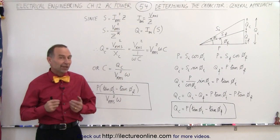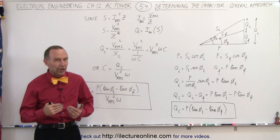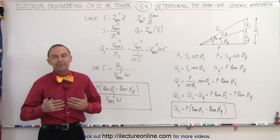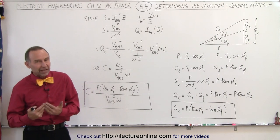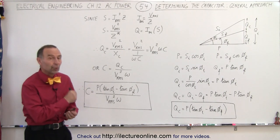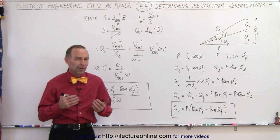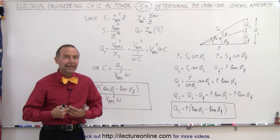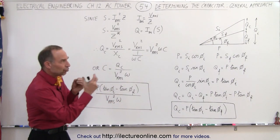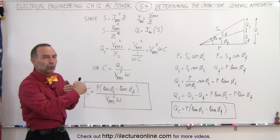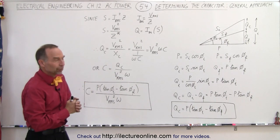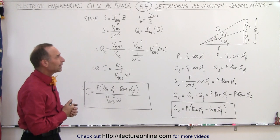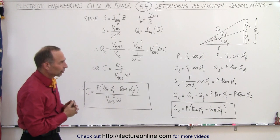Welcome to our lecture online. We're now ready to find the general equation to find the capacitance required to maximize the impedance, to maximize the power factor and therefore to minimize the current required to the load. The load is an inductive load, and therefore we need a shunt capacitor to minimize the current requirement and cancel out the phase angle caused by the inductive reactance.